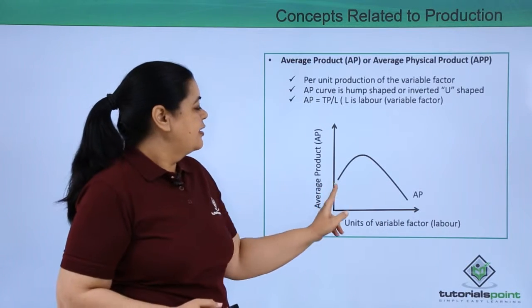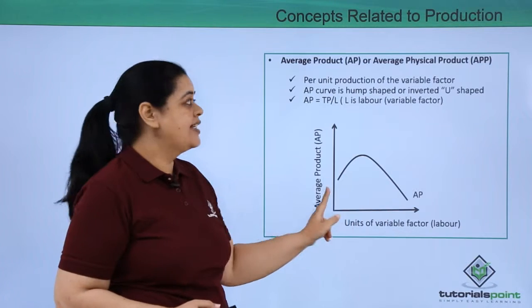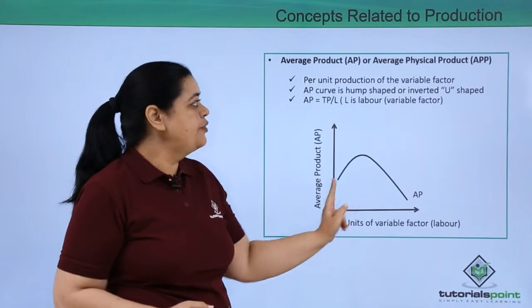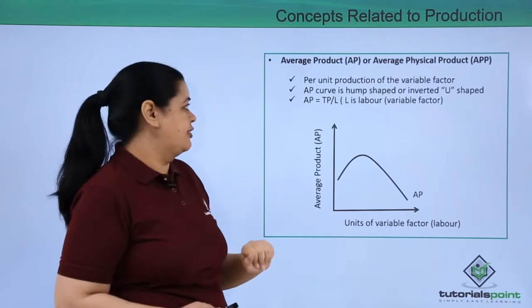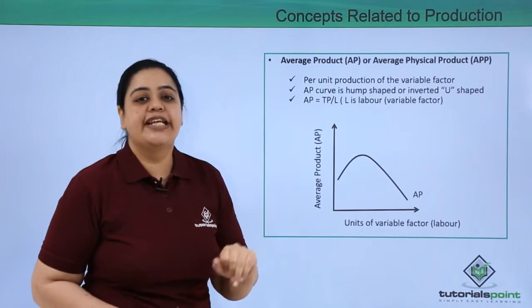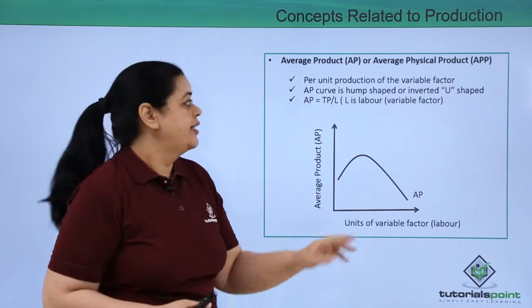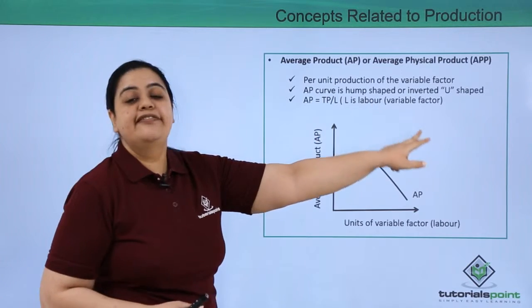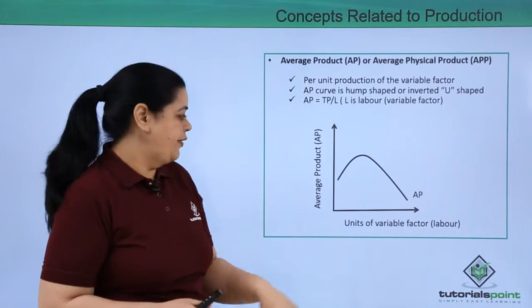So what is happening here? The hump is getting formed here. Hence it is known as inverted U or a hump-shaped curve. So if I have to give you an equation, AP would be equal to TP divided by L, where L is the variable factor labor.